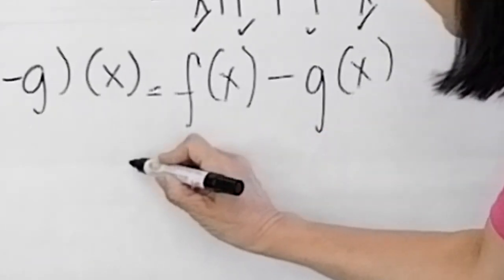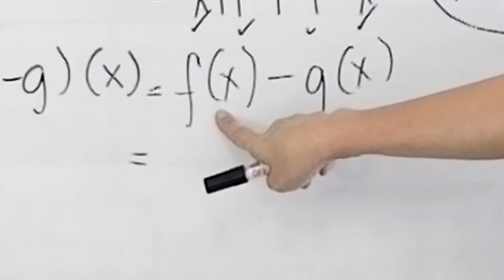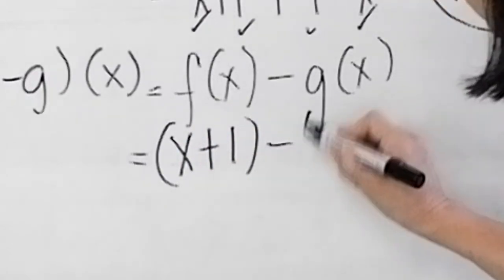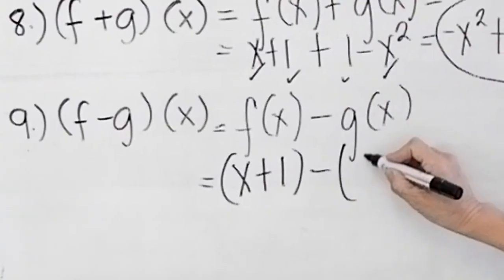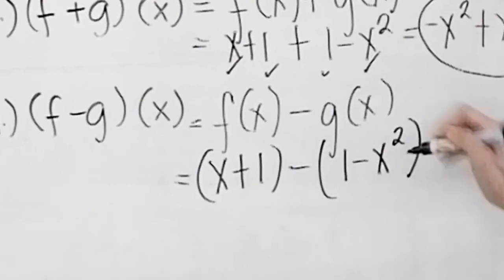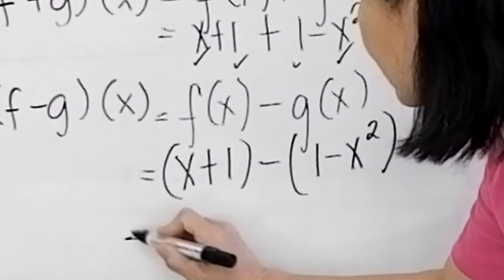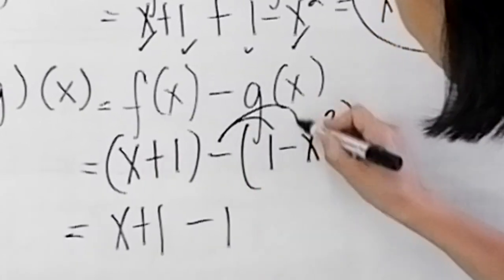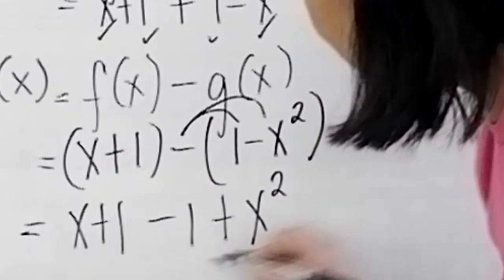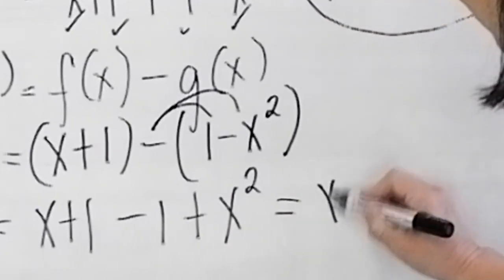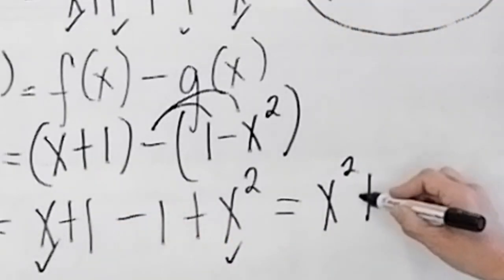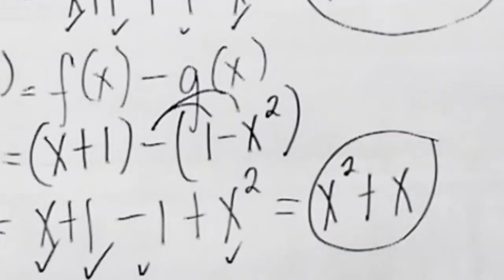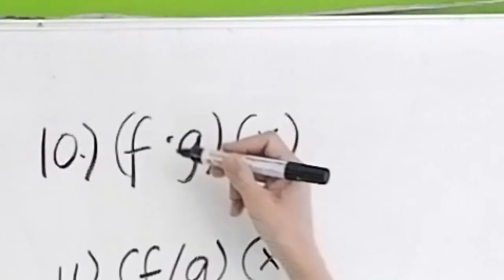Next, (f-g)(x) is f(x) minus g(x). Plug in: f(x) is x + 1, minus g(x) which is (1 - x²). Distribute the negative: you get x + 1 - 1 + x². Combining like terms: 1 minus 1 is 0, so the final answer is x² + x.